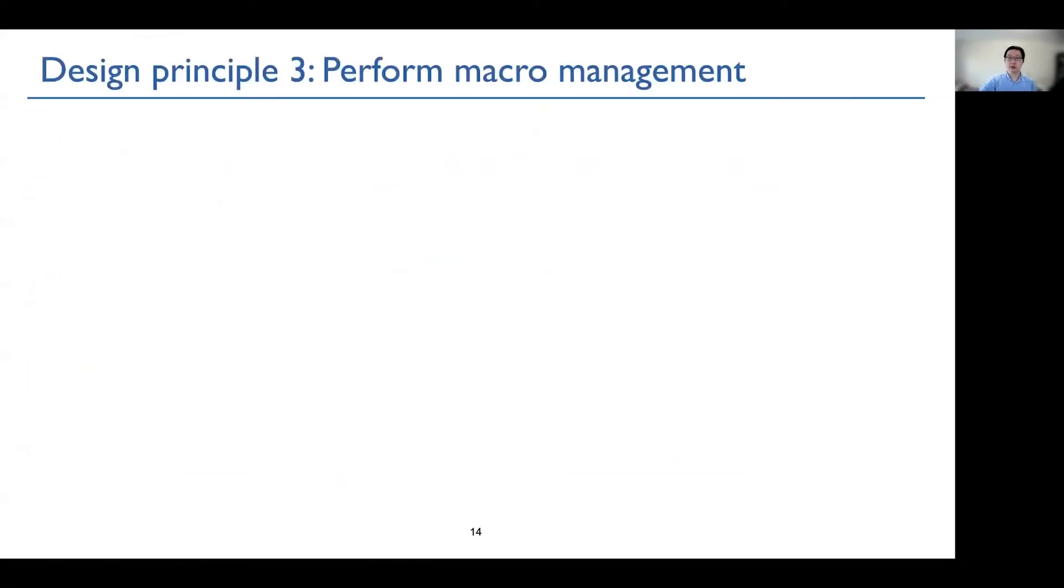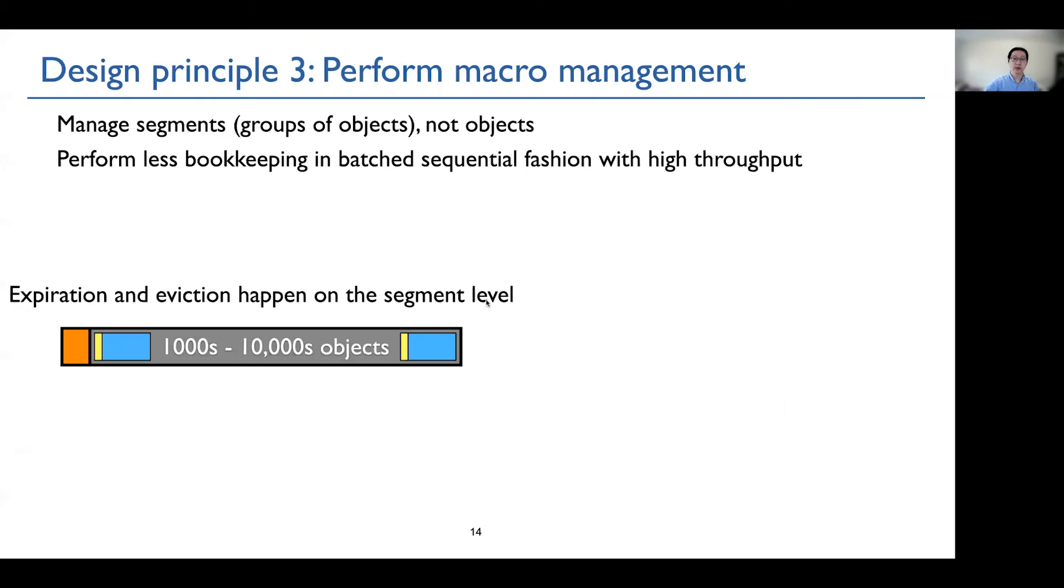The third design principle of Segcache is that Segcache performs macro-management. So it manages segments, which is groups of objects, not objects. Therefore, expiration and eviction happen on the segment level, and Segcache does not need to maintain object free queue, or object LRU chain. Therefore, it does not need locking on these chains or queues.